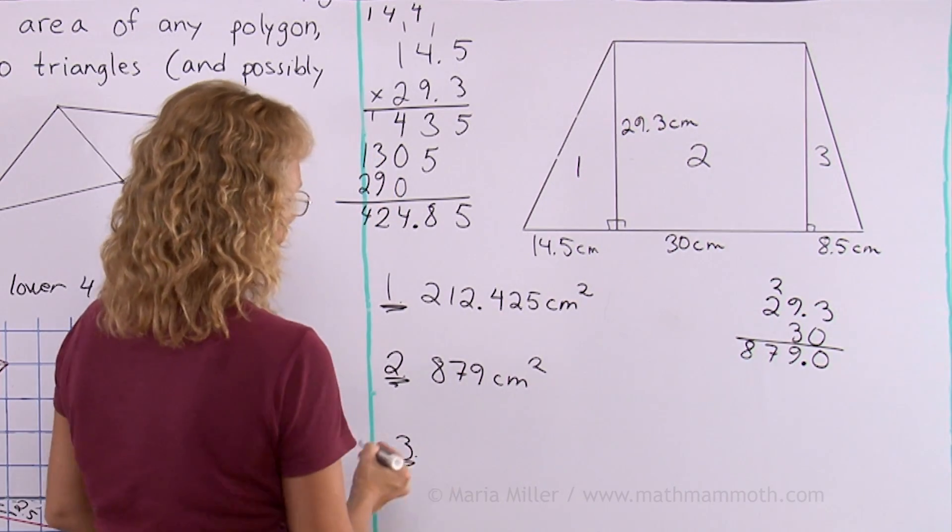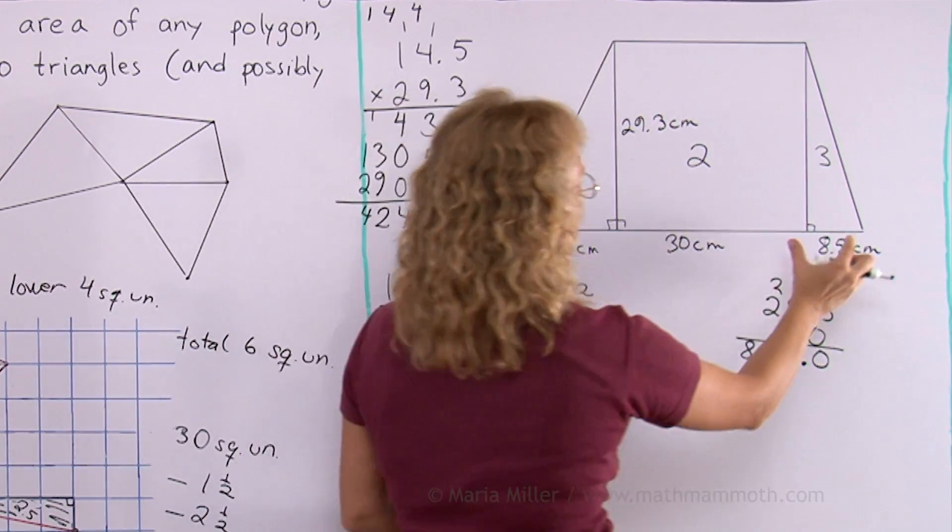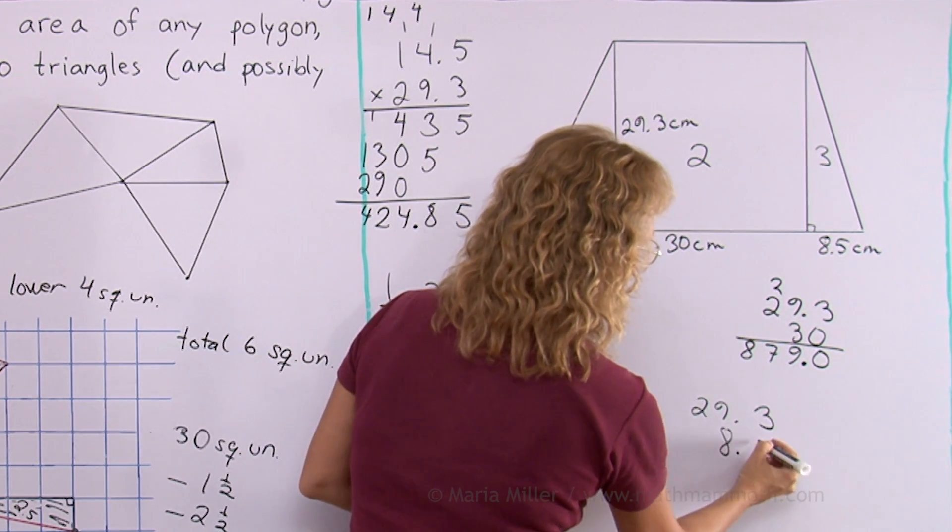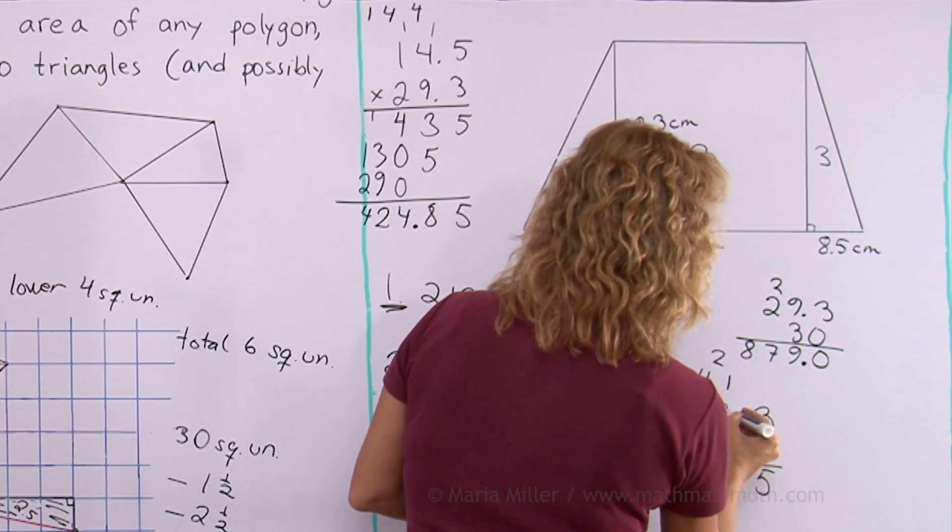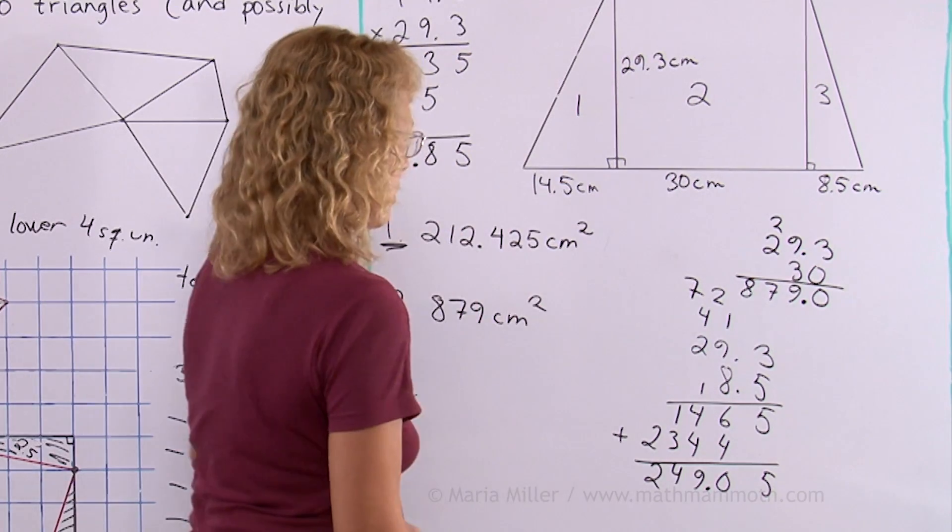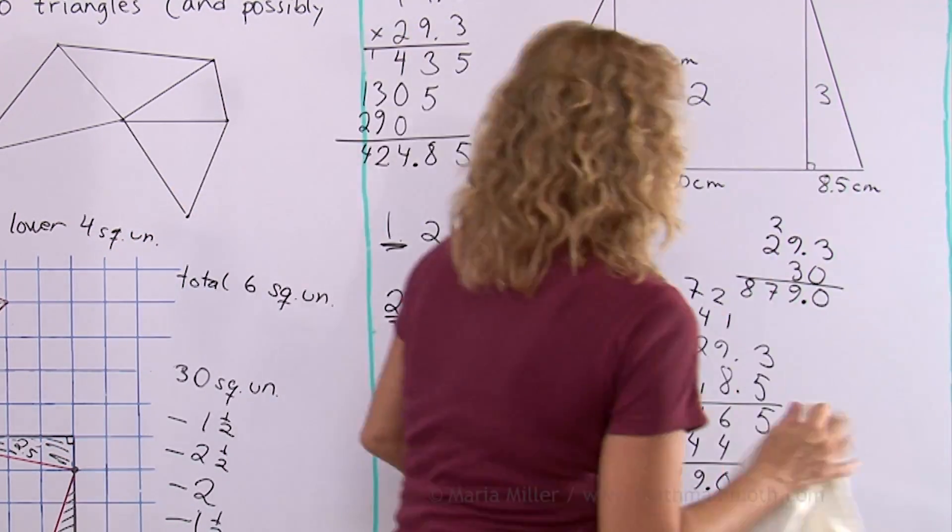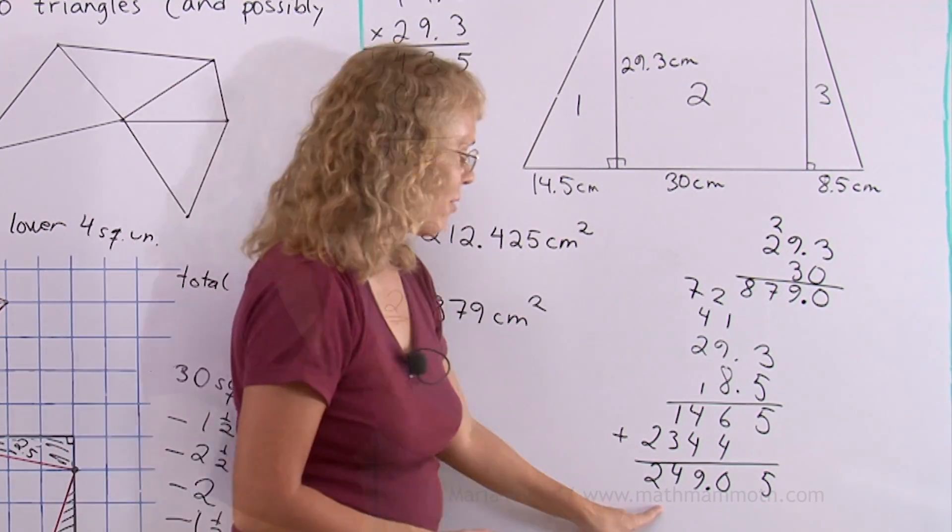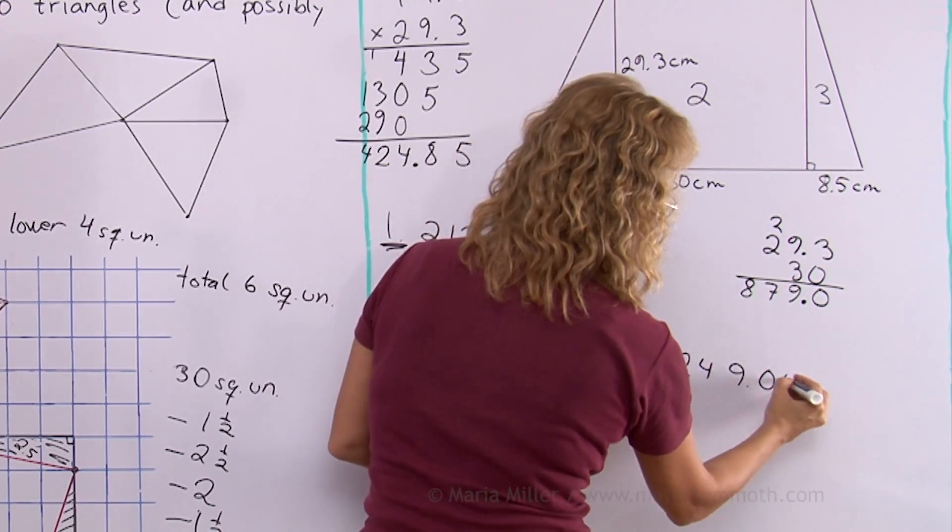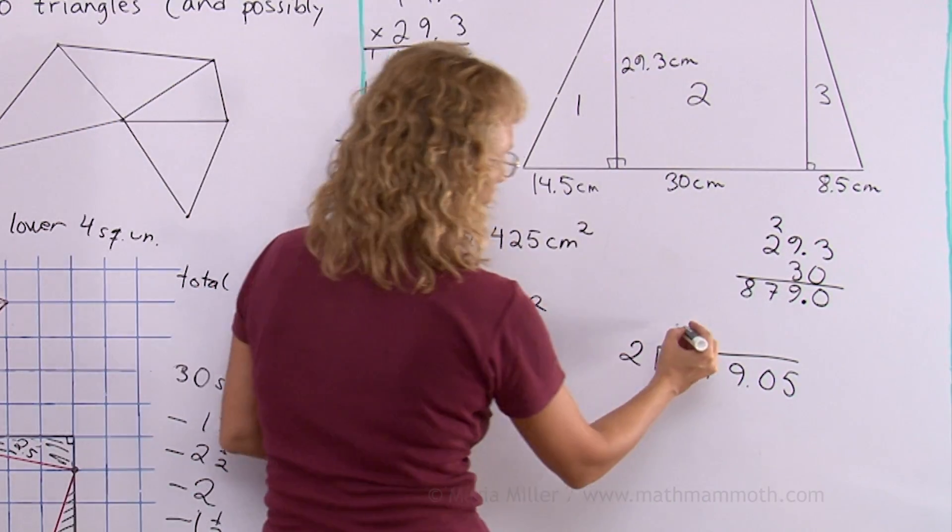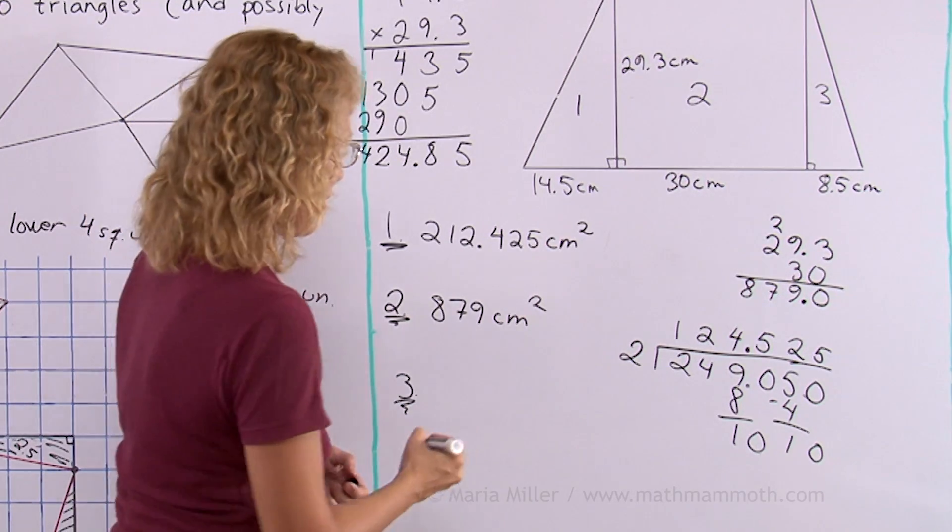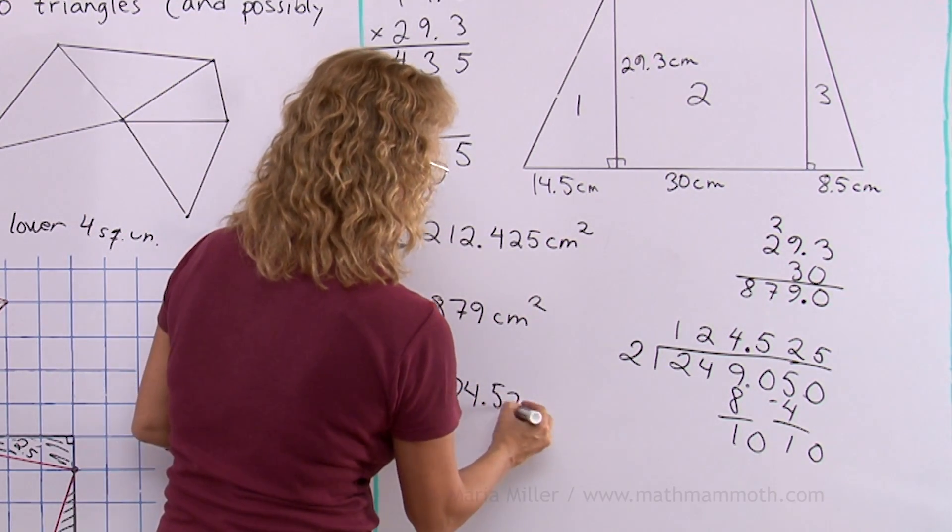And then the third triangle. Again we need to go base times altitude and then divide by 2. I will do 29.3 times 8.5. Again I have two decimal digits in my factors, so two decimal digits in the answer. The danger is it is so easy to forget to divide by 2. We need to divide this by 2. Now we're going to divide this by 2.